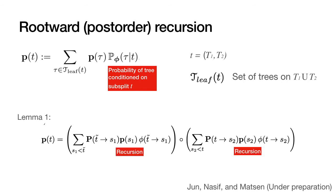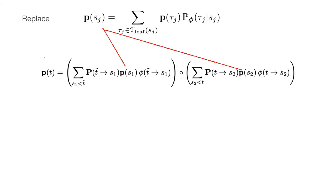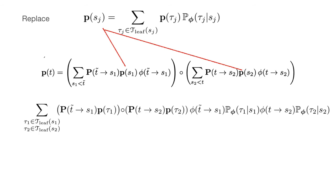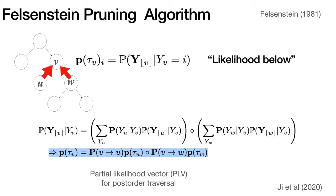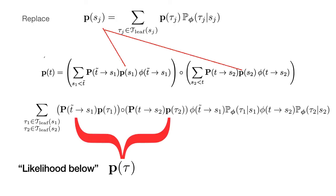So recall here that tilde represents rotated subsplit and we say S is less than T if S is a child subsplit of T. So we have the partial likelihood vector for subsplit T written in terms of partial likelihood vectors for children S1 and S2. To show that this result holds, we simply replace the definition of the PLV for the children subsplits S1 and S2. And we end up with the likelihood below as defined in the previous slide here. And we also end up with the probability of a tree rooted at T.